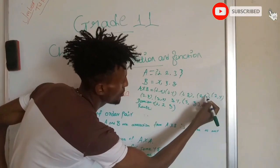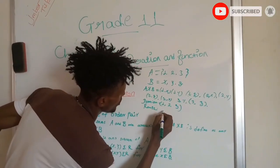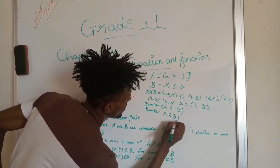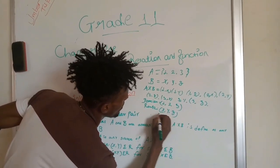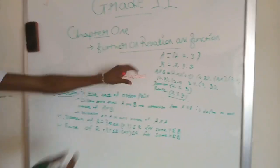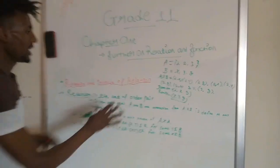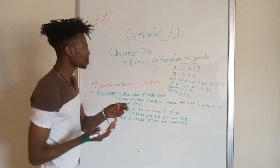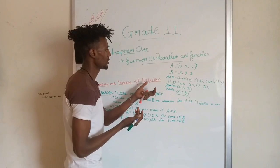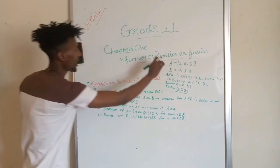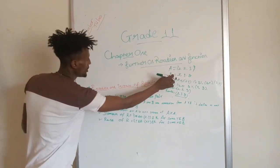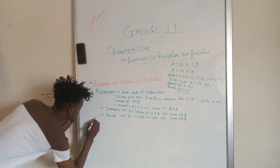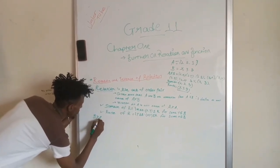If you want to use X, Y, Z — this is a relation. This is the inverse of the relation. For example, we have A to B. The inverse of the relation is B to A.